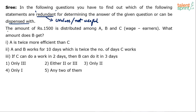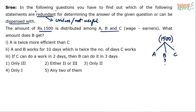Now here's the question: an amount of rupees 1500 is distributed among A, B and C who are wage earners. What amount does B get? So 1500 rupees is being distributed among A, B and C. How much does B get is the question here. Now how do you divide wages among persons? It is divided based on the capacity — basically it is divided based on the amount of work done by each person.